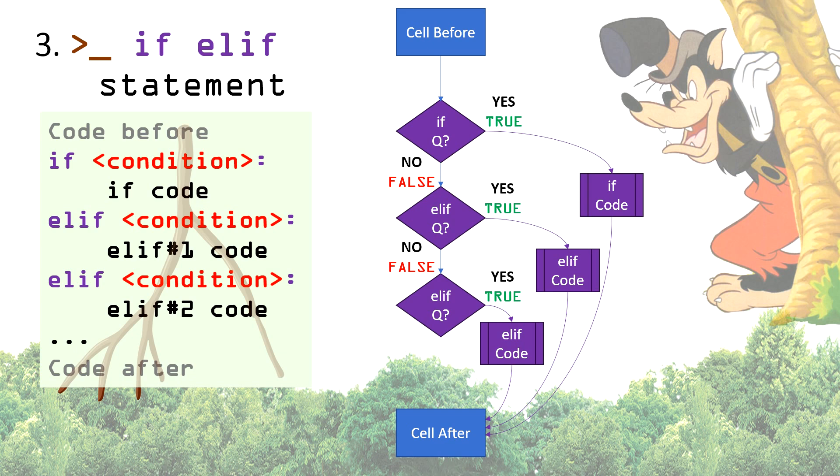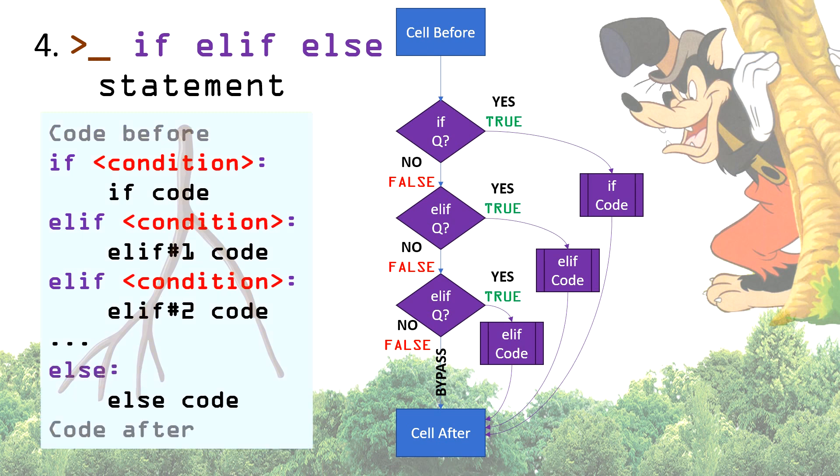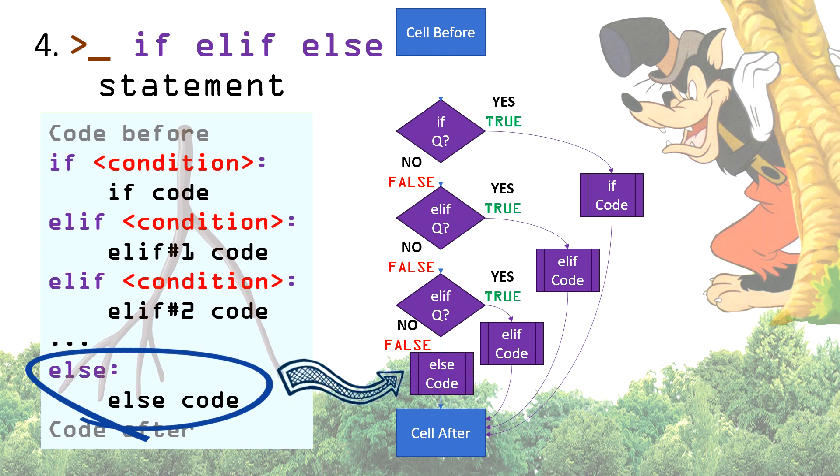Finally, the last elif condition with false answer will move directly to the next code after and ignores executing any code, as all condition answers are false. Last type of if statements is if-elif-else statement, which is the same execution and code of previous type, if-elif, except the else code that will be injected along with the last false answer instead of just bypassing.